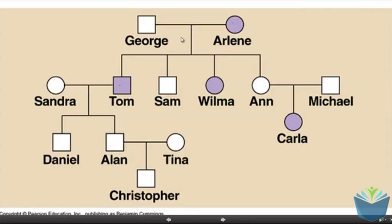In this case, George and Arlene are parents of Tom, Sam, Wilma and Ann. Ann's spouse is Michael, and Sandra is Tom's spouse. Obviously Sandra isn't a blood relative to George and Arlene, and neither is Michael.